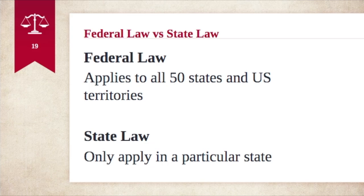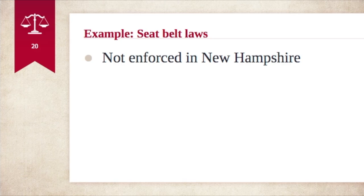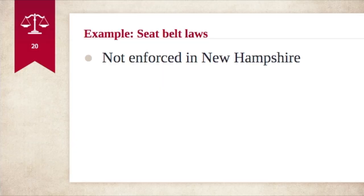As an example of the difference between state and federal law, consider seatbelt laws. In states like New York, Pennsylvania, and Vermont, if you drive without a seatbelt on, you are breaking state law. However, in New Hampshire, this is not a state law — you can drive without a seatbelt and not be cited for it. But if you drive across the border into Vermont without your seatbelt on, you are breaking state law there. Seatbelt laws are not federal laws, so enforcement varies by state.